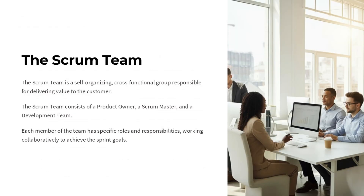The Scrum team is the core unit responsible for delivering value to the customer. It's a self-organizing, cross-functional group made up of a product owner, Scrum master, and development team. Each member has specific roles and responsibilities, but they all work together collaboratively to achieve the sprint goals. The Scrum team structure enables agility, accountability, and efficient delivery of the product.